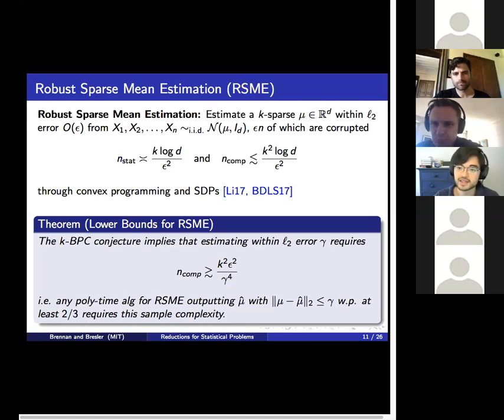The theorem we're going to show is that the KBPC conjecture implies that estimating with L2 error gamma requires n_comp at least k squared epsilon squared over gamma to the fourth. Plugging in the optimal error O of epsilon gives exactly k squared over epsilon squared, ignoring log factors. More formally, any polynomial time algorithm for robust sparse mean estimation that outputs an estimate within L2 error gamma with probability at least two-thirds requires this higher sample complexity than the information theoretic barrier.